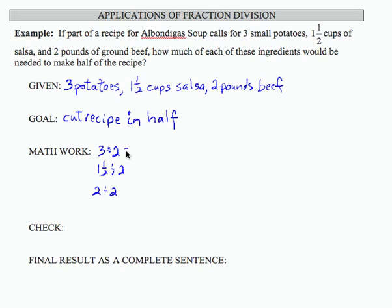So three divided by two is three over one times one half, which is three halves, or one and a half.